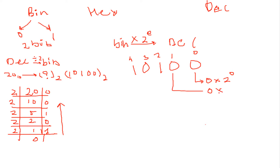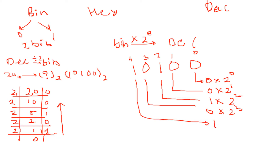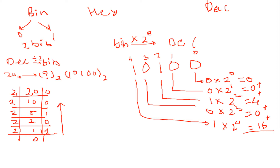Now multiply each digit by its positional weight: 0 into 2 raise to 0 is 0; 0 into 2 raise to 1 is 0; 1 into 2 raise to 2 is 4; 0 into 2 raise to 3 is 0; and 1 into 2 raise to 4 is 16. Adding all results: 16 plus 4 equals 20.